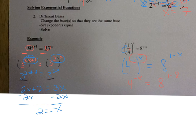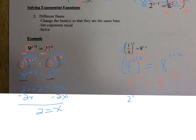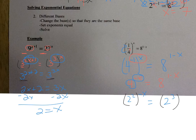Now I want to get the bases to be the same. I cannot write 8 as 4 squared — 4 squared is 16, not 8. So I have to change both bases. Another way to write 4 is 2 squared, and I raise it to the negative x power. Another way to write 8 is 2 to the 3rd, and I raise that to the 1 minus x power. The left side becomes 2 to the negative 2x, and the right side becomes 2 to the 3 minus 3x.